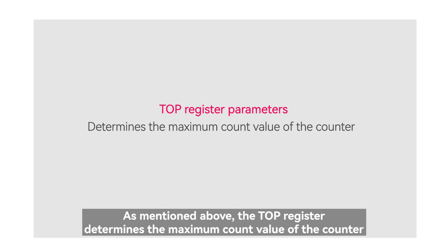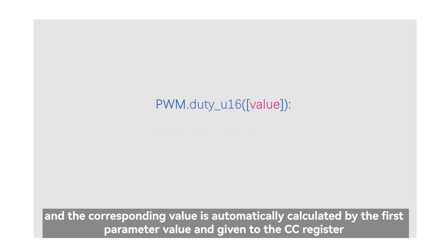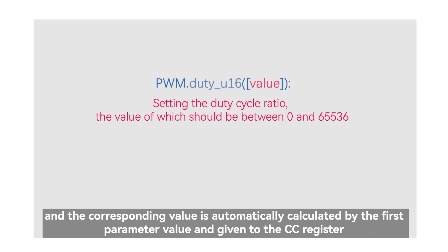As mentioned above, the top register determines the maximum count value of the counter. The duty_u16 function is used to set the duty cycle, and the corresponding value is automatically calculated by the first parameter value and given to the CC register.